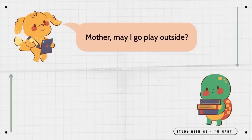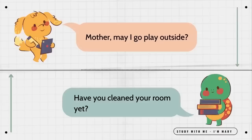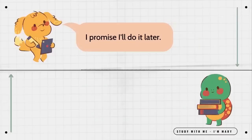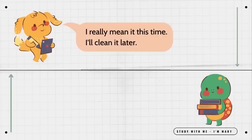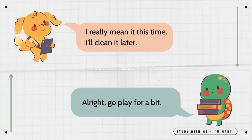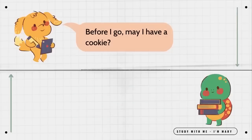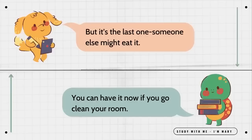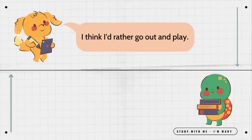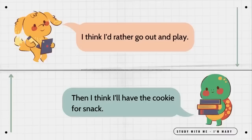Mother, may I go play outside? Have you cleaned your room yet? I promise I'll do it later. You said that yesterday. Go clean it now. I really mean it this time. I'll clean it later. All right. Go play for a bit. Before I go, may I have a cookie? You can have it later. But it's the last one. Someone else might eat it. You can have it now if you go clean your room. I think I'd rather go out and play. Then I think I'll have the cookie for snack.